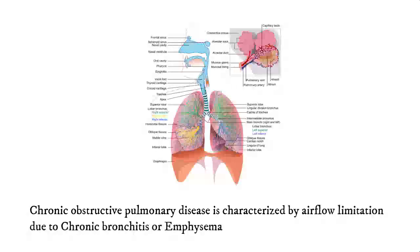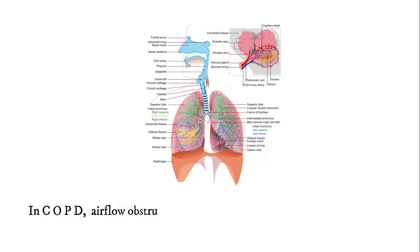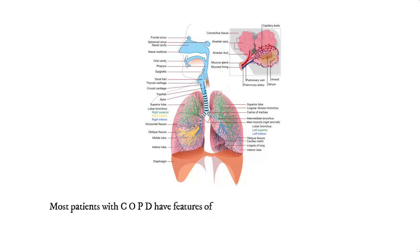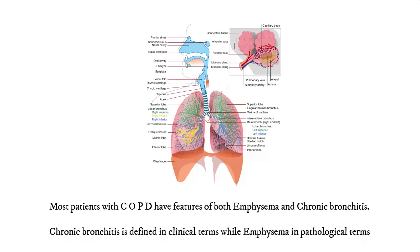Chronic obstructive pulmonary disease is characterized by airflow limitation due to chronic bronchitis or emphysema. In COPD, airflow obstruction is progressive and impairment of lung function may only be partially reversible with bronchodilator therapy. Note that most patients with COPD have features of both emphysema and chronic bronchitis.